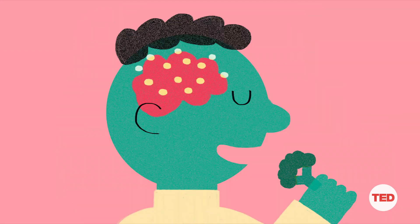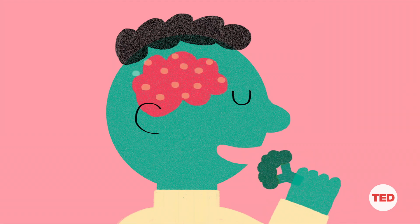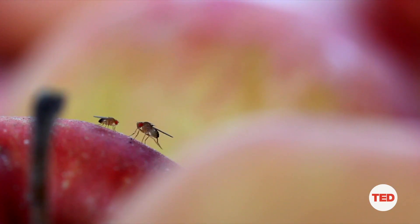Now there's a new technology called optogenetics, which may be able to trick our taste buds. For instance, preferring vegetables over sweets. We're going to try this today using fruit flies.